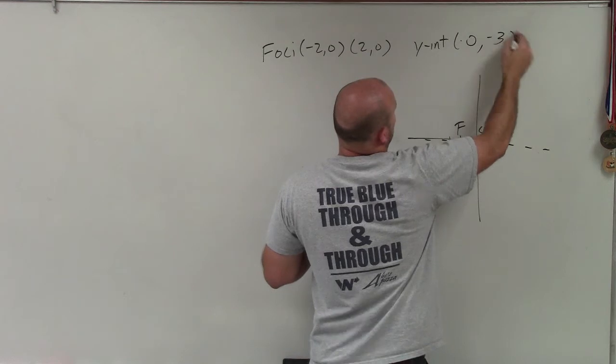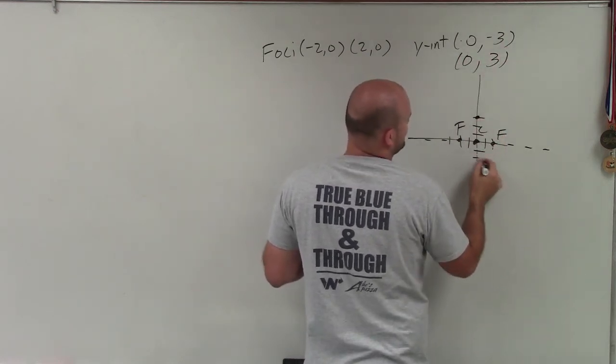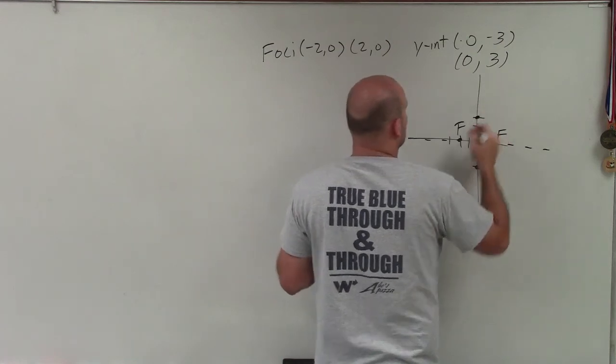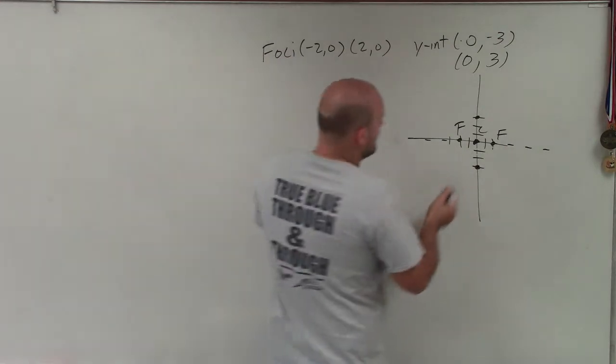It's (0, -3) and (0, 3). One, two, three. Negative three. One, two, three. All right, that makes sense. So that's where the graph is going to cross.